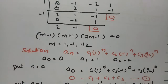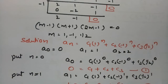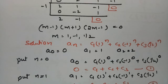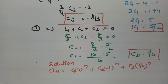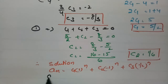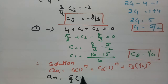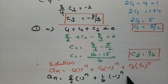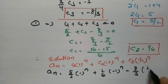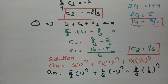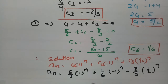Therefore the final solution is a(n) = (5/2)(1)ⁿ + (1/6)(-1)ⁿ + (-8/3)(1/2)ⁿ. This is the complete answer to the recurrence relation problem.